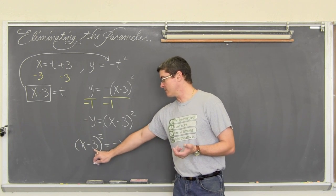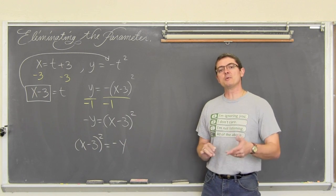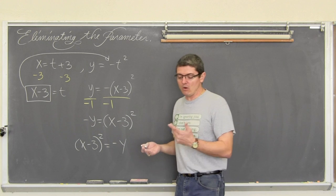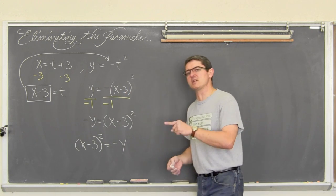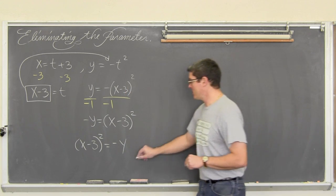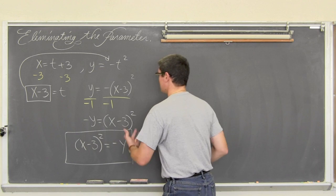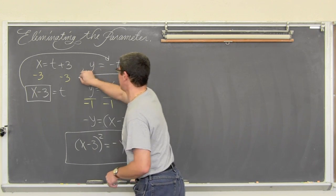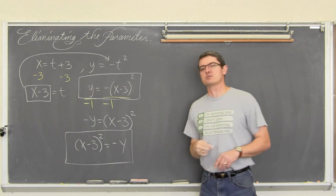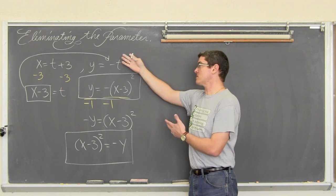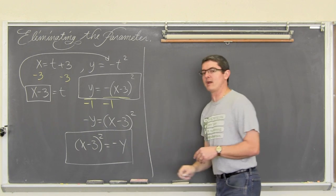So this is a parabola with the vertex at 3, 0 which opens down, which is exactly what we had in the, I believe the first example in the last video. So here is our equation. And I am sure your teacher as well as myself would accept either one of these answers where you would say here are some parametric equations to eliminate the parameters.